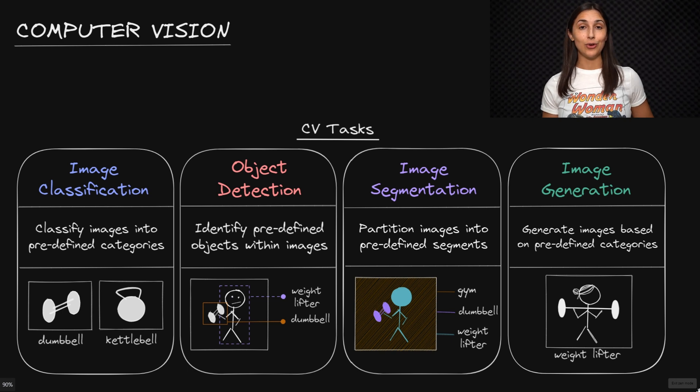Computer vision is used greatly in various aspects of the analysis and processing of visual data. Outlined here, we have various different computer vision tasks that are common practice today.